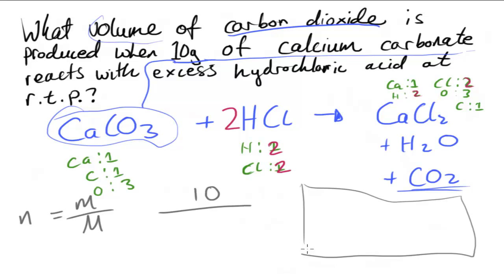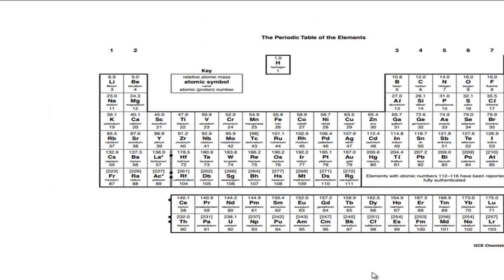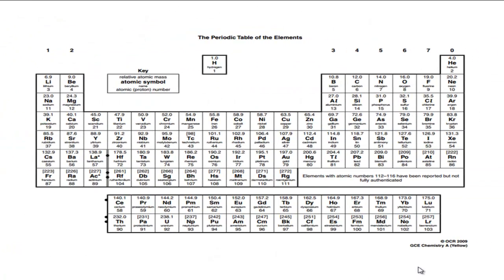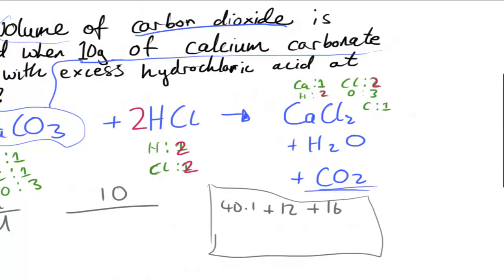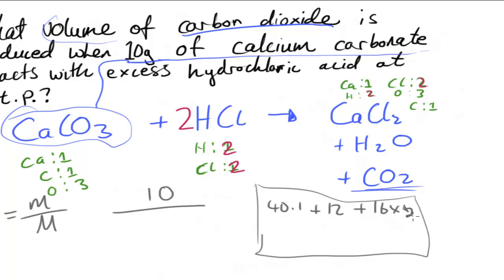Let me work out the molar mass of CaCO₃. That's Ca = 40.1, plus C = 12, plus 16 multiplied by 3 for the three oxygens. That gives us 40.1 + 12 + 48, which equals 100.1 g/mol. So we divide 10 by 100.1.